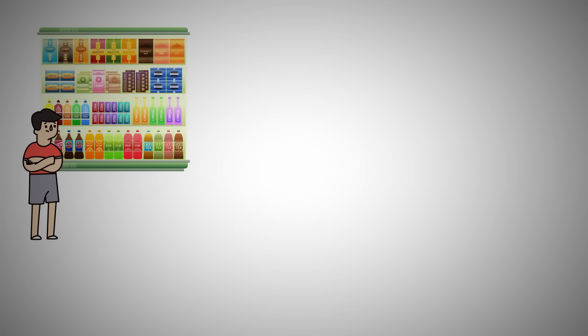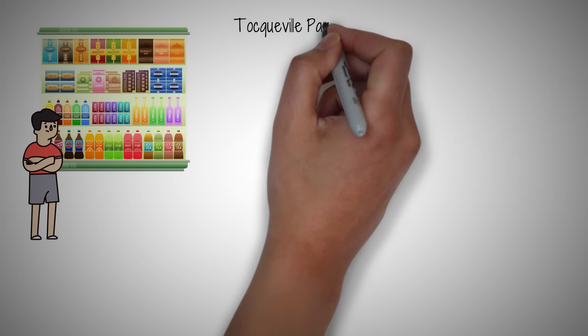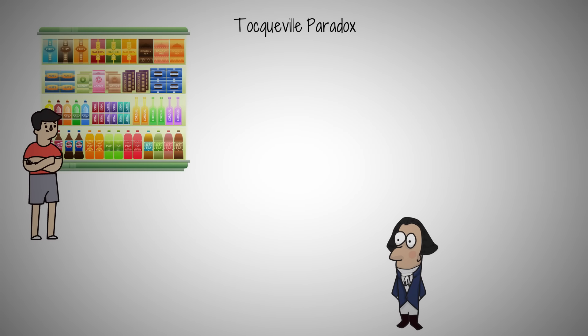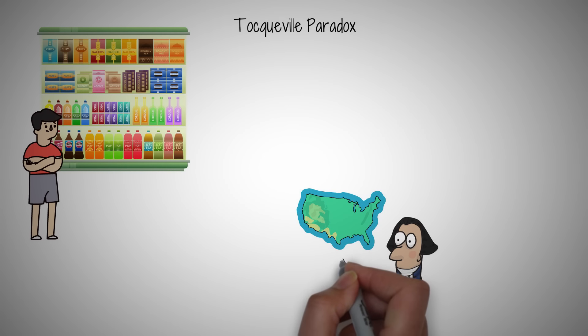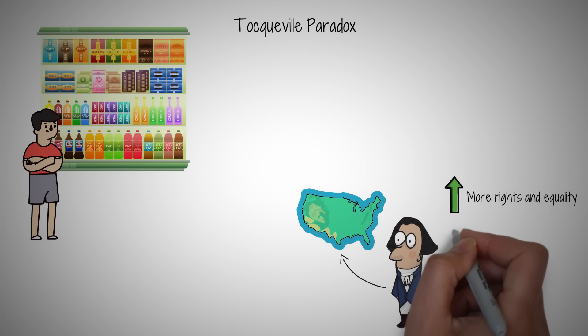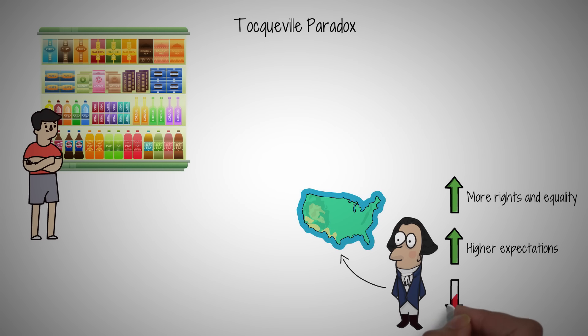Ever wondered why, despite having more freedom and choices than ever before, we often feel less satisfied? Welcome to the Tocqueville paradox. In the 1830s, Alexis de Tocqueville traveled to America to understand why its democracy was so successful. He discovered something profound. As people gained more rights and equality, their expectations increased, making them feel more entitled and less content.